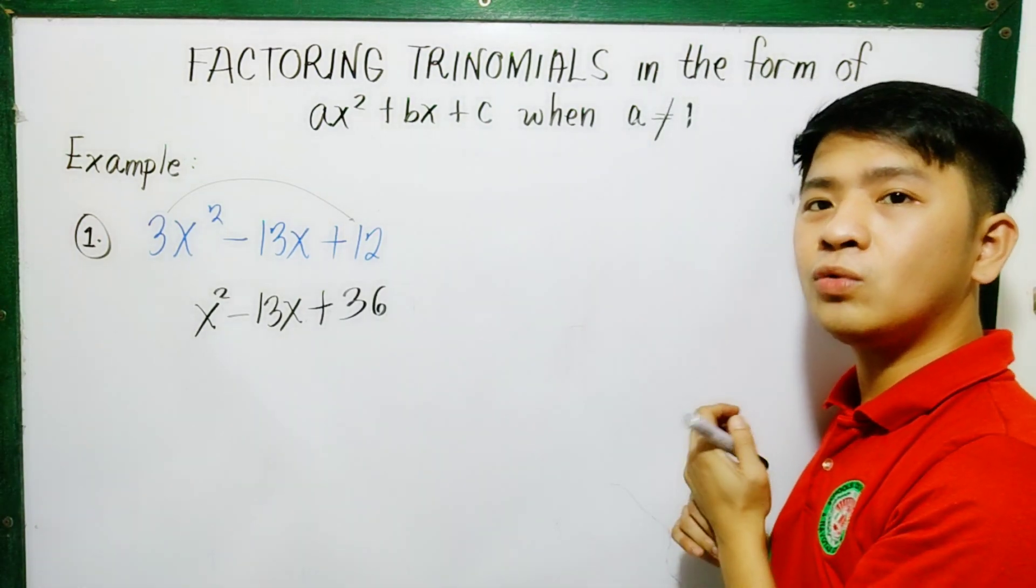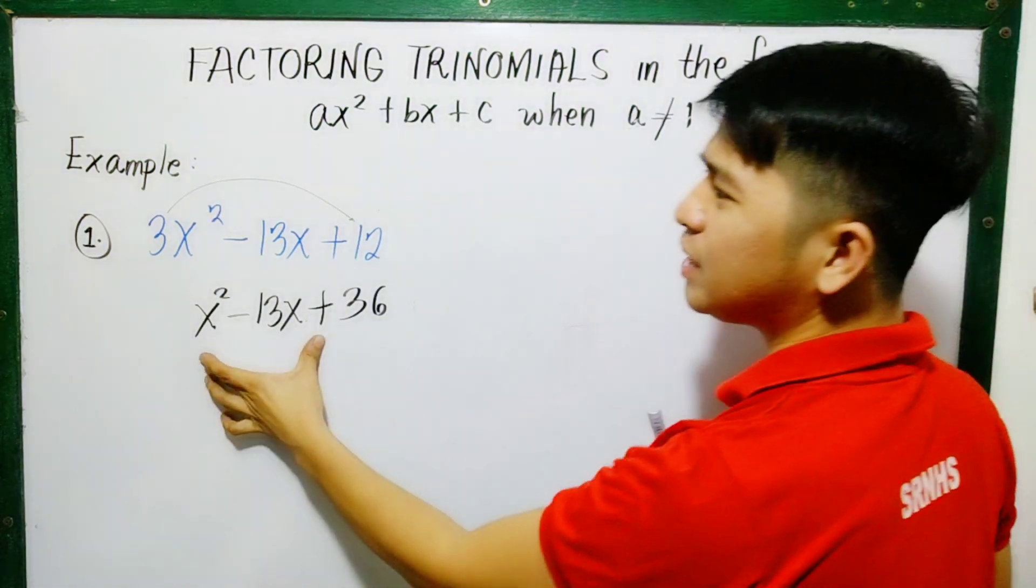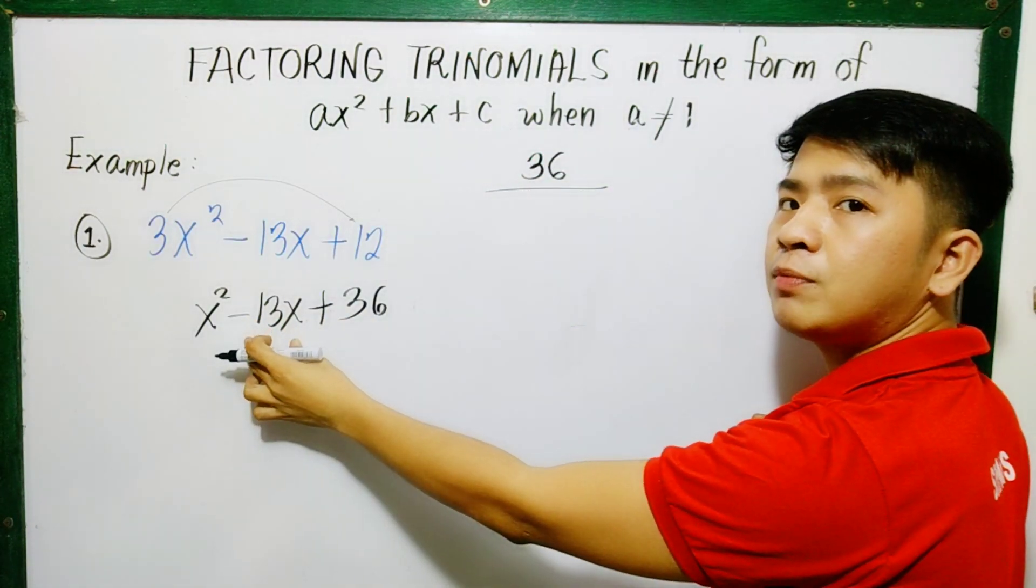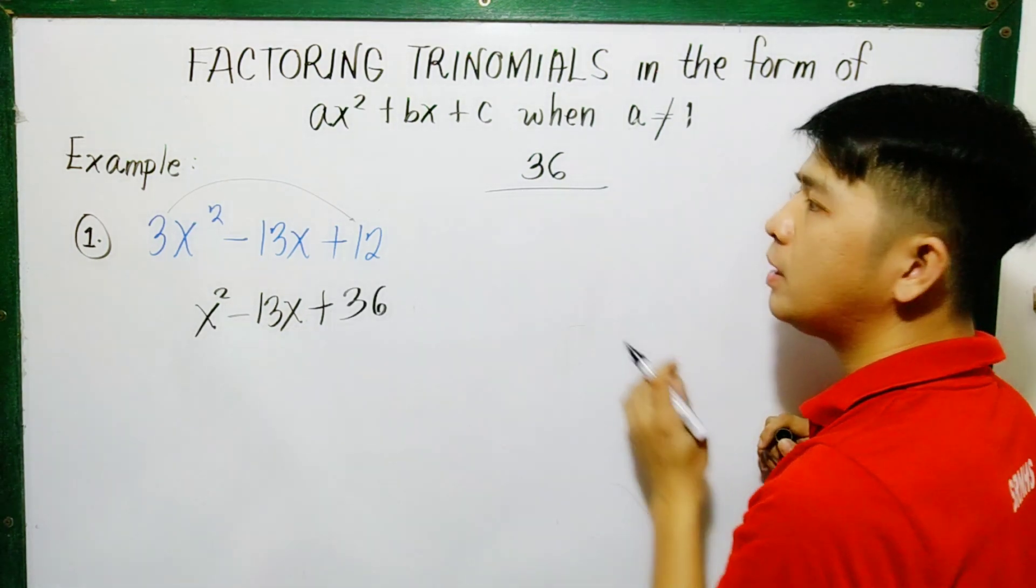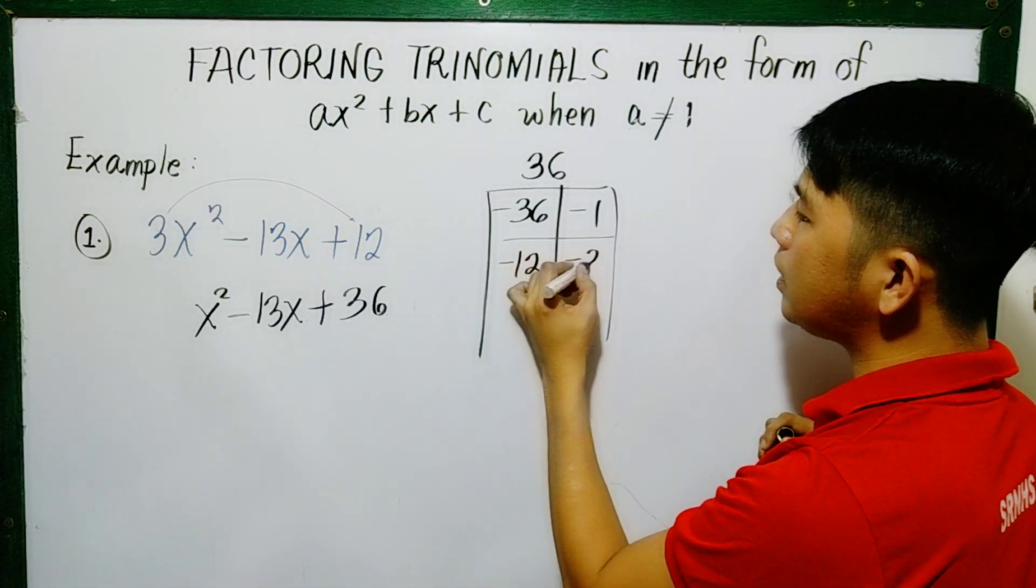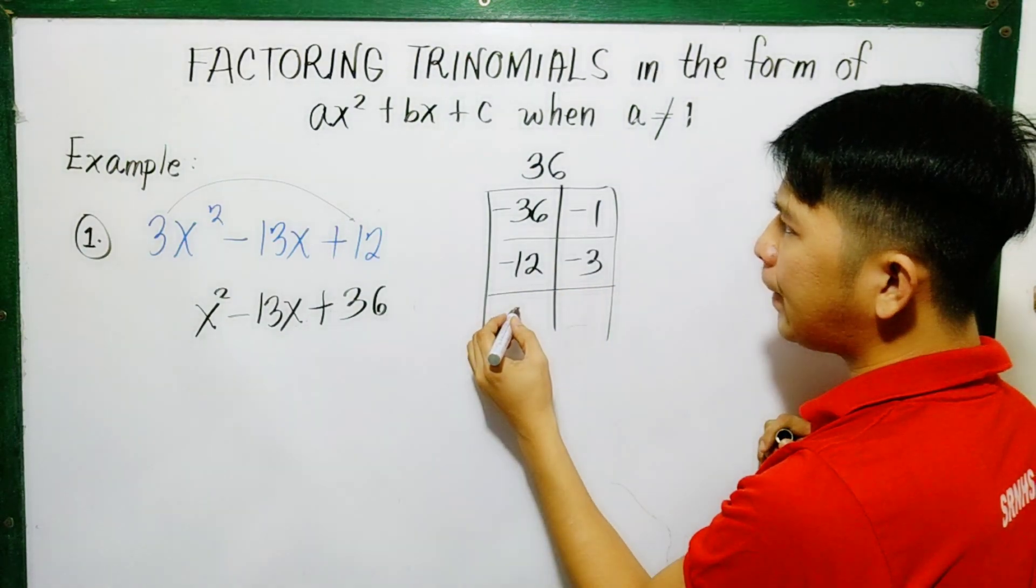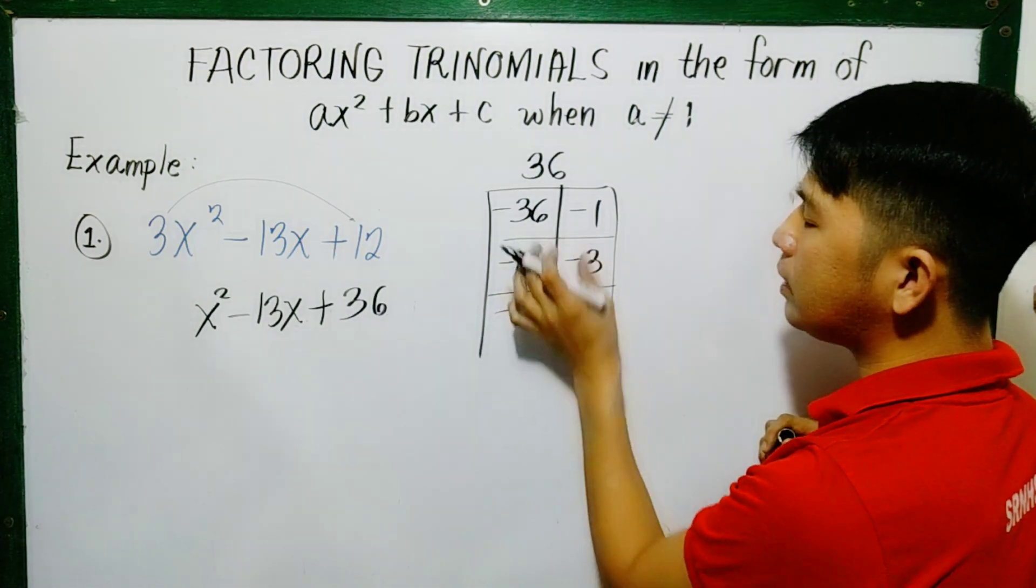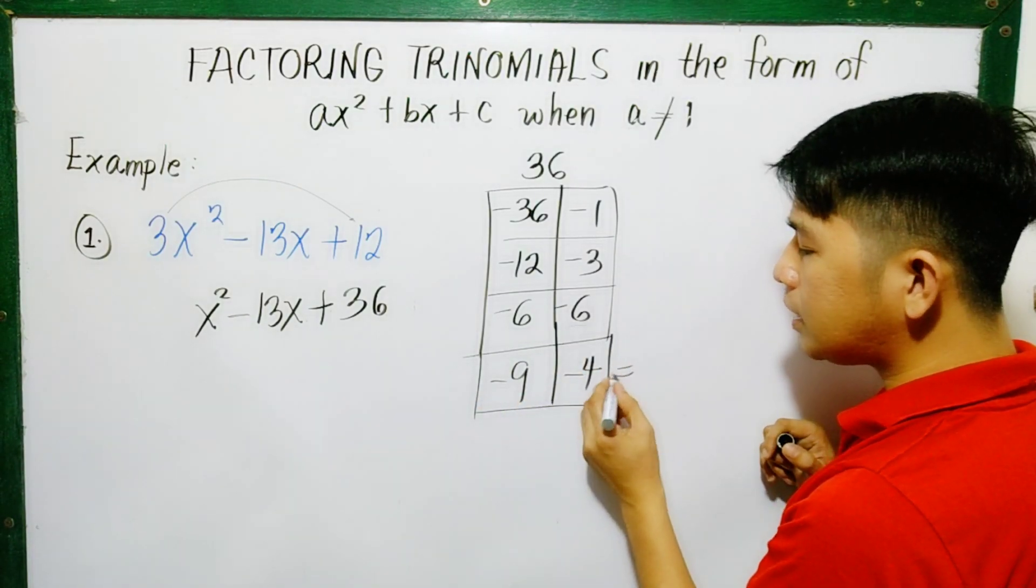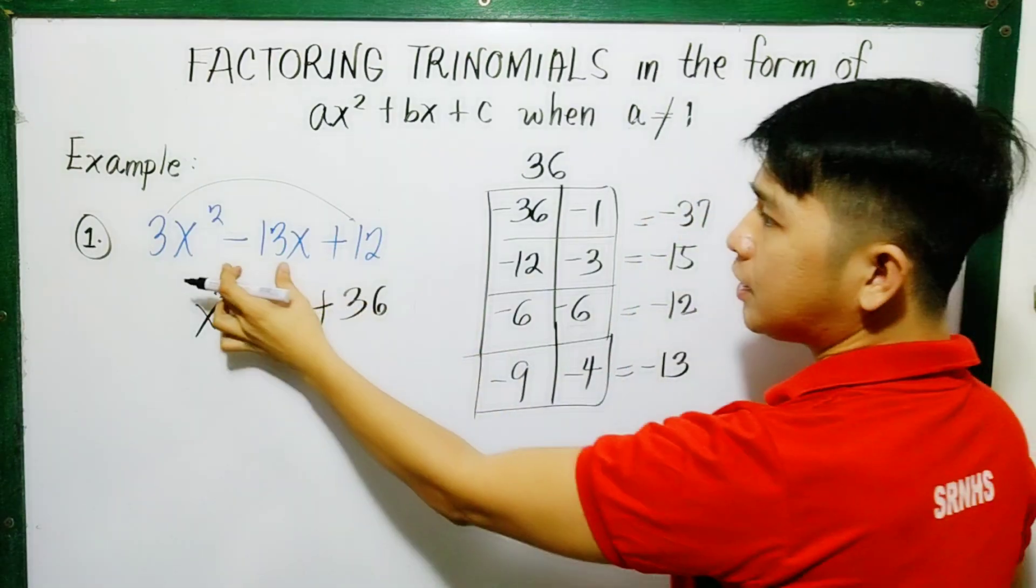And then, it's like we're now factoring, similar to my previous video when a is equal to 1, imagine it's 1. So how was that done again? We'll get the 36, positive 36. What are the factors of 36? Our target is negative 13. So they should both be negative. What is it? It could be negative 36 times negative 1, which gives negative 37. It could also be negative 12 and negative 3, which gives 15. It could be 6 and 6, both negative, still no. So let's use negative 9 and negative 4. This will be negative 13 when we take the sum.